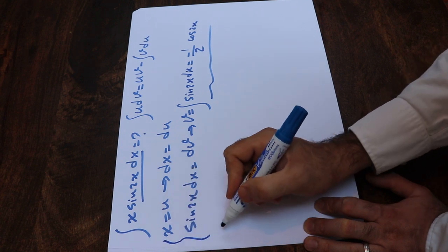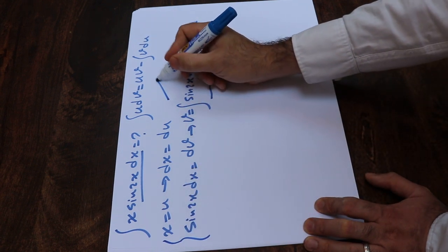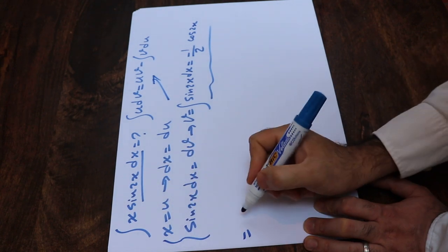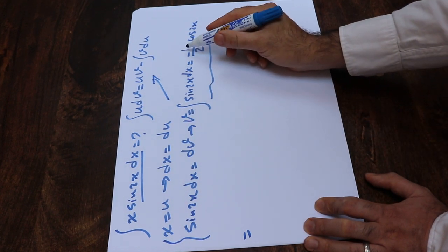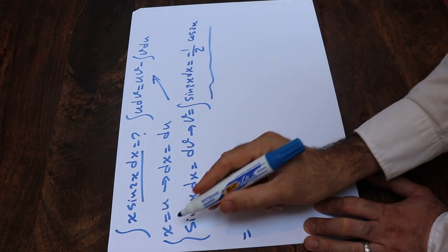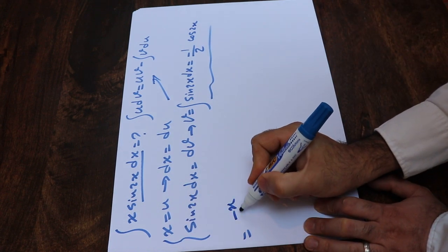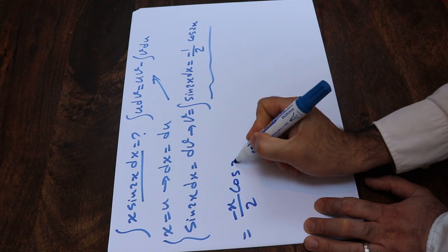So now you need to basically substitute these equations into this formula. Therefore, this integral will be equal to uv, u is x, v is minus 1 divided by 2 times cosine 2x. Therefore, uv will be equal to minus x divided by 2 cosine 2x.